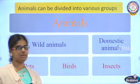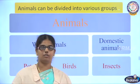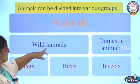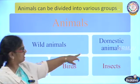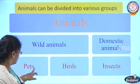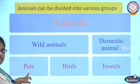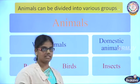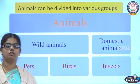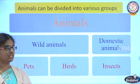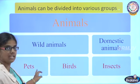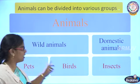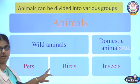Animals can be divided into many groups: wild animals, domestic animals, pets, birds, and insects. Now we are going to see them one by one.